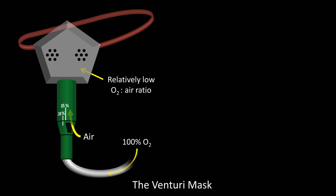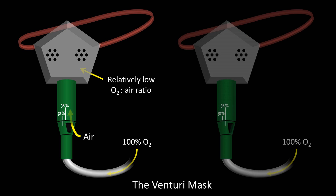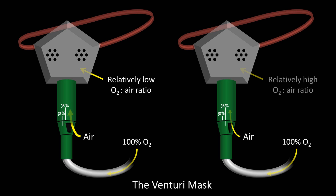If the cone-shaped green segment is rotated to a different setting, the trapezoid hole becomes smaller, so when the oxygen rushes past, less air can be drawn inside. This results in a relatively high oxygen-to-air ratio within the mask.